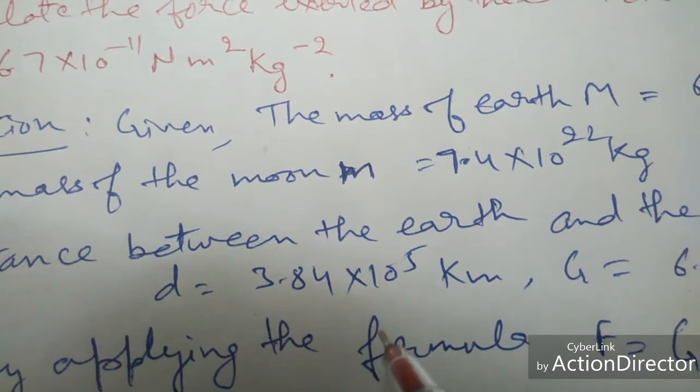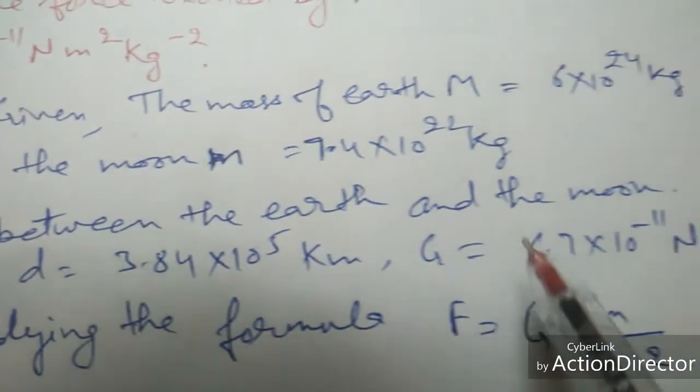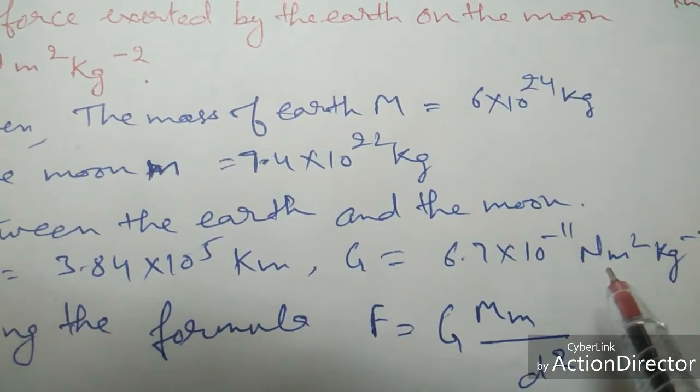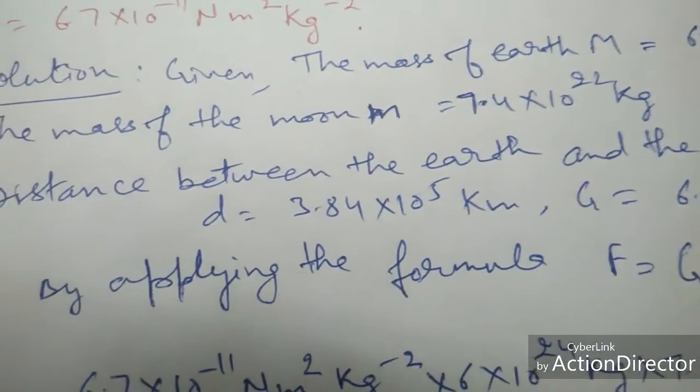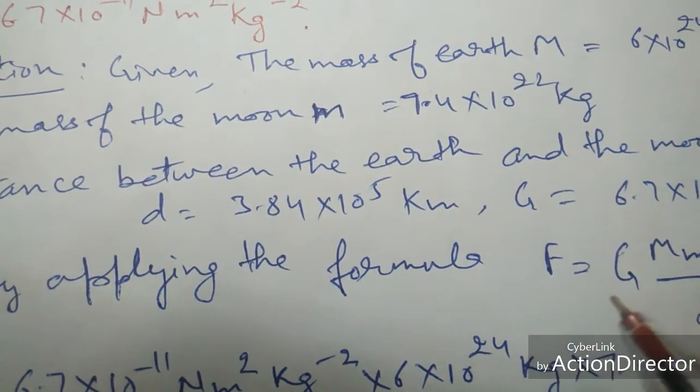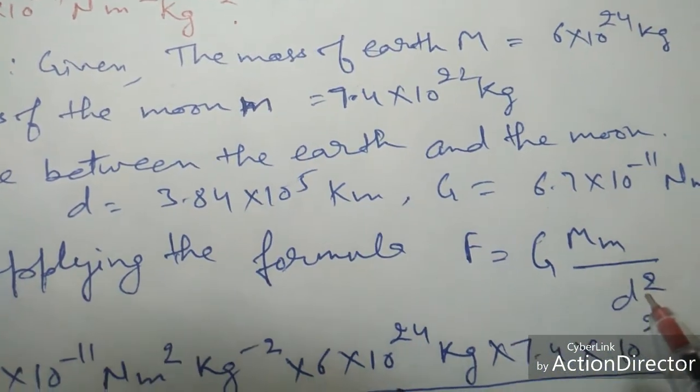We will convert into meters in the later stage. The value of G is 6.7 × 10⁻¹¹ Nm² per kg². Here by applying the formula, F is equal to G × M × m upon d².